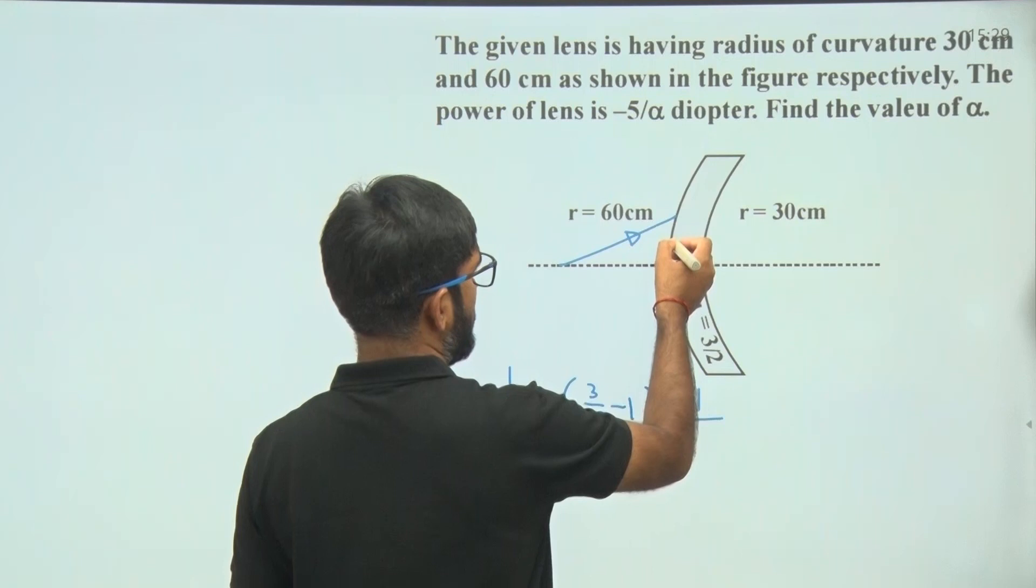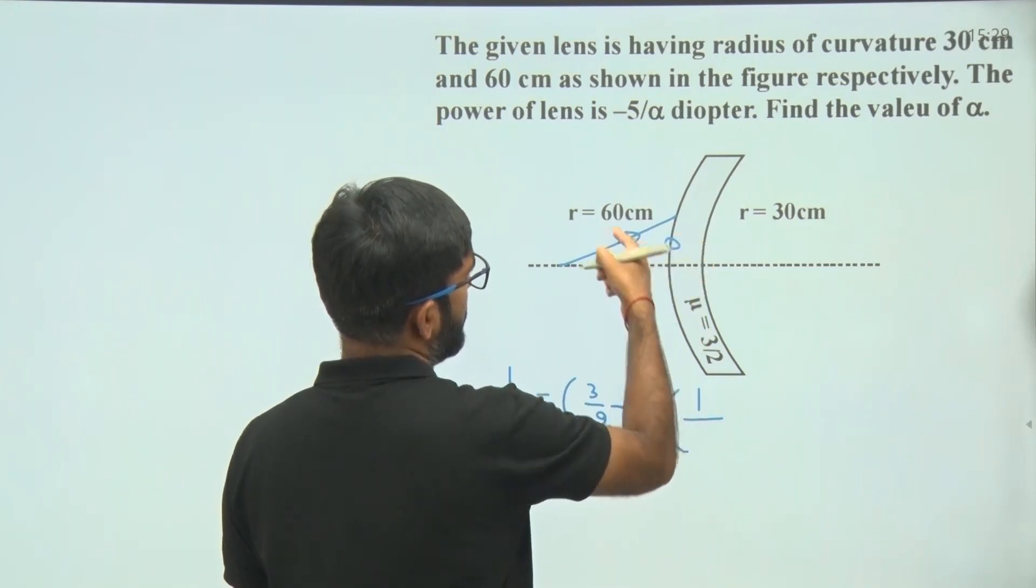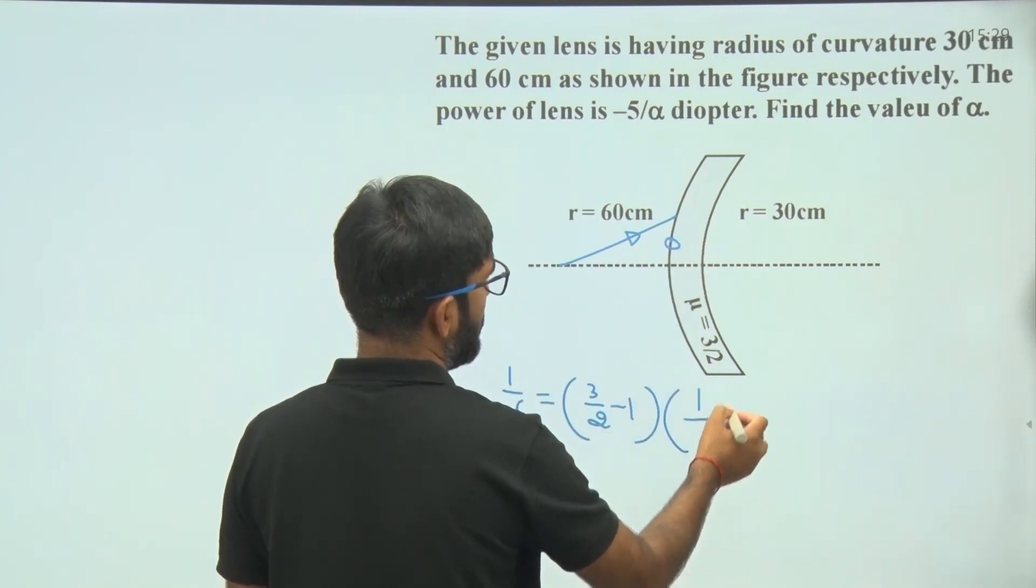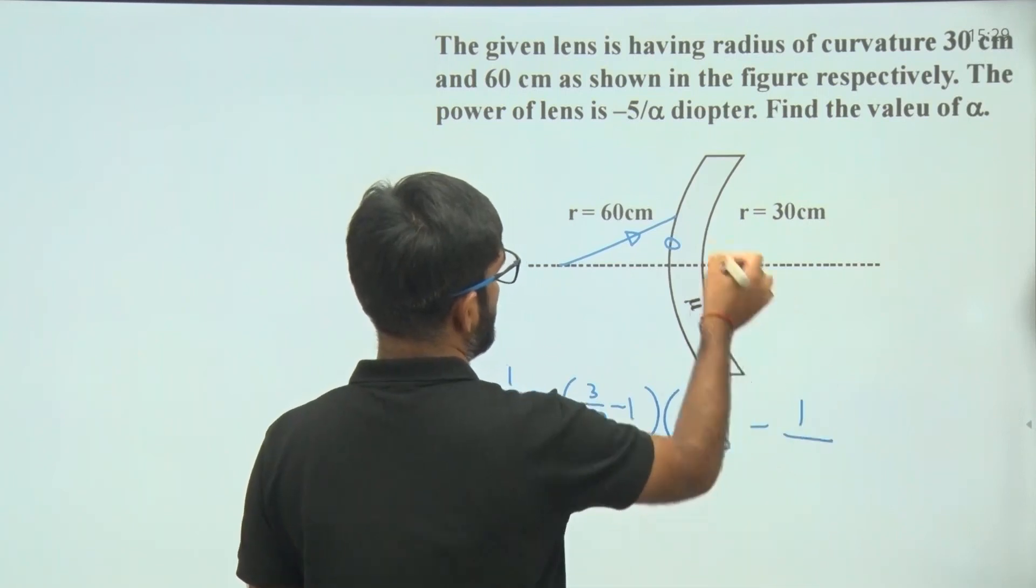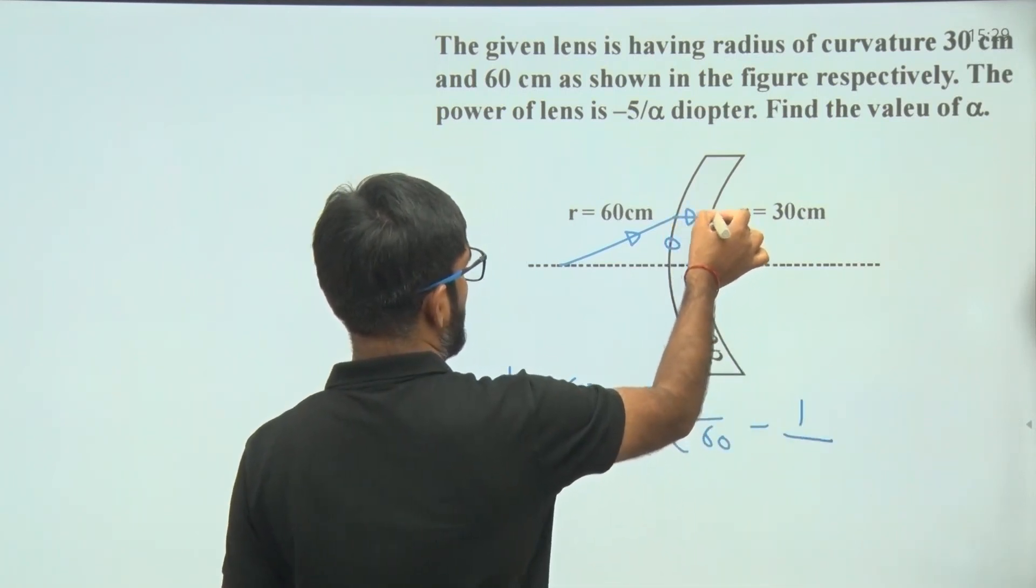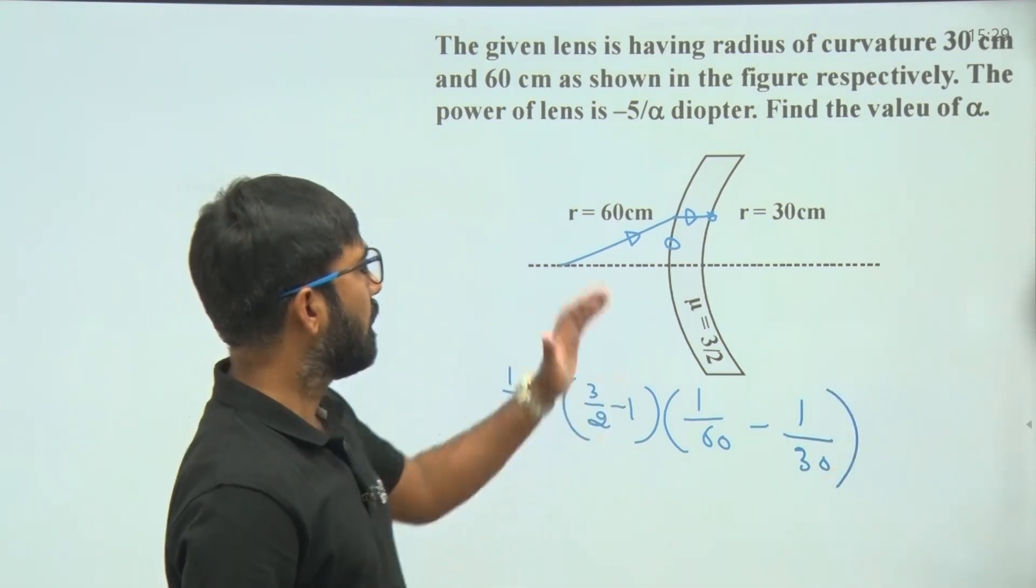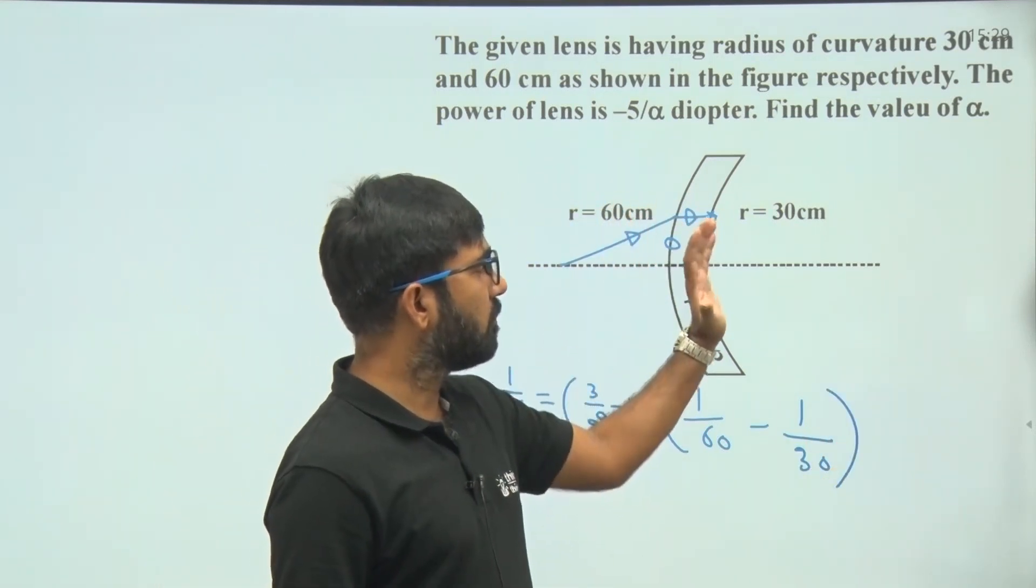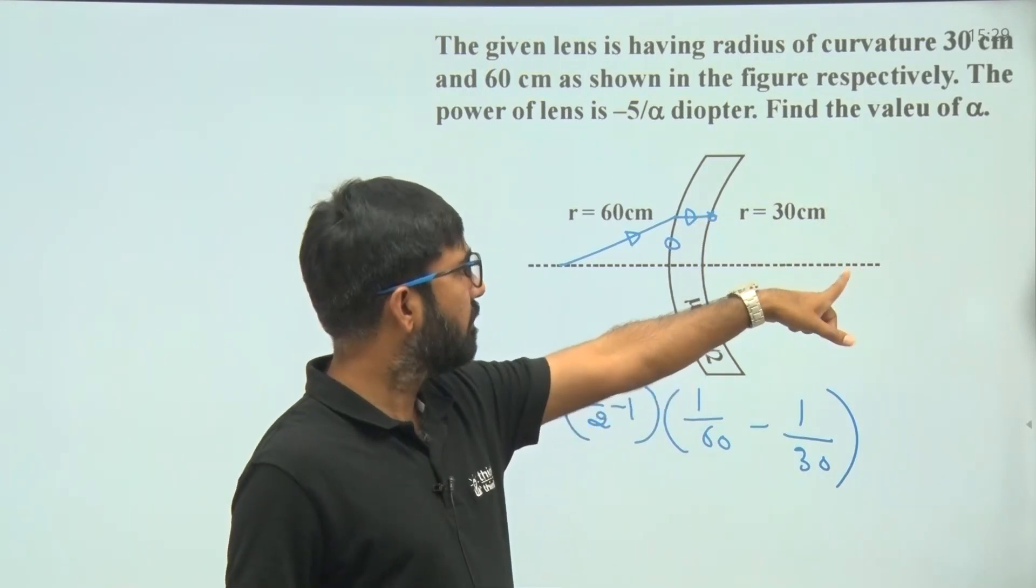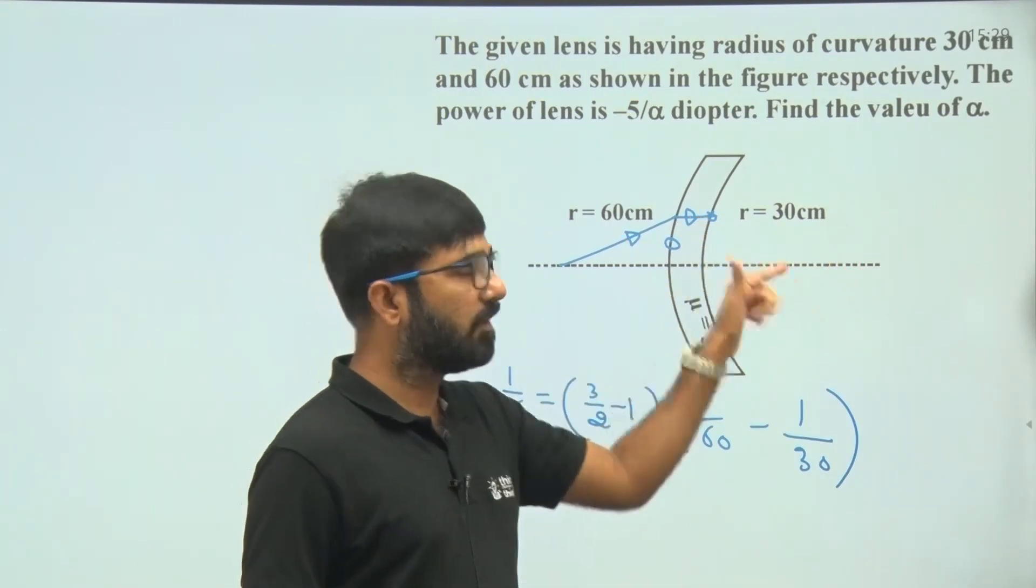1 by r1, radius of curvature of this surface is 60, so 1 by 60 minus 1 by r2. r2 means radius of curvature of this surface, this will be 30. r1 and r2 both will be positive because the center of curvature of r1 and r2 both are on the right side, that means in the direction of the incident ray.